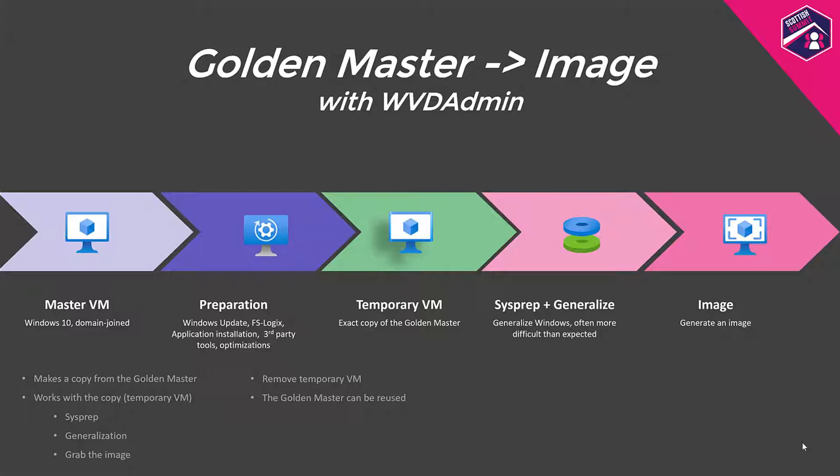WVD Admin's approach is nearly the same, but the third step is different. It starts with a domain-joined golden master where you install all applications and Windows updates. Before sysprep and generalization, WVD Admin creates a temporary virtual machine in the background and runs all subsequent steps — sysprep and generalize — on that temporary VM, not the original. At the end, you have an image and your golden master is still alive. You can reuse it after a week or two, make further updates, and create new images for session hosts whenever you want.